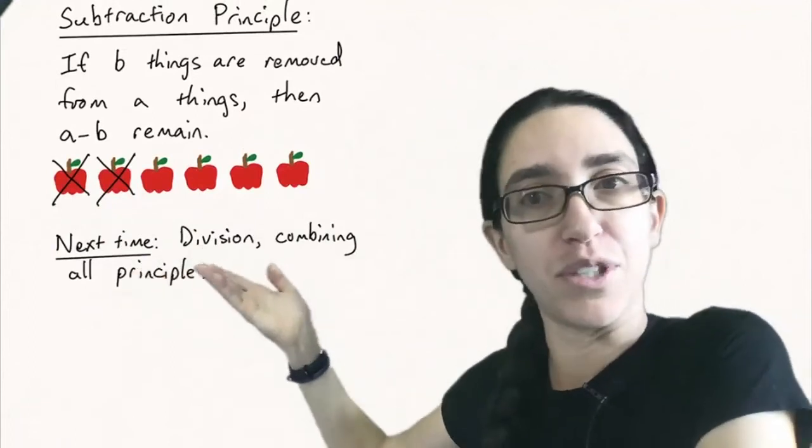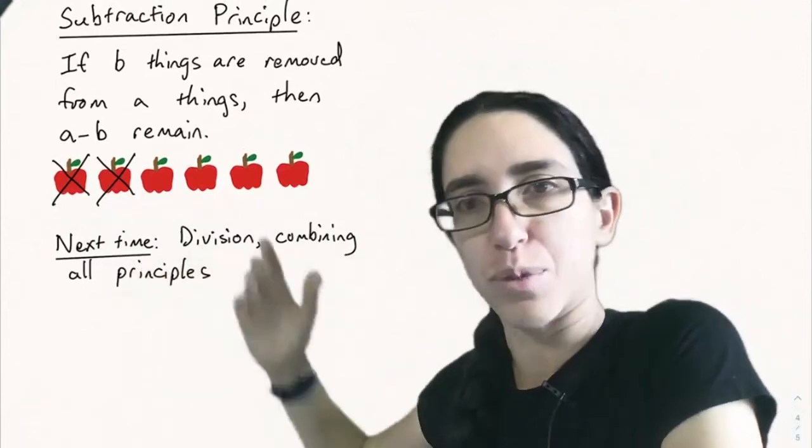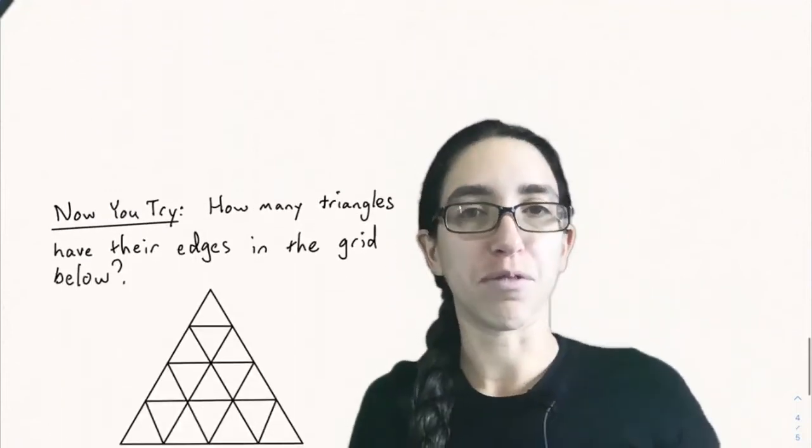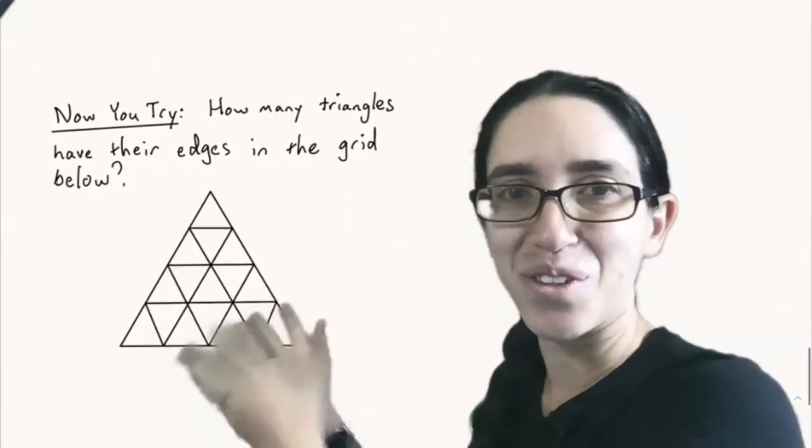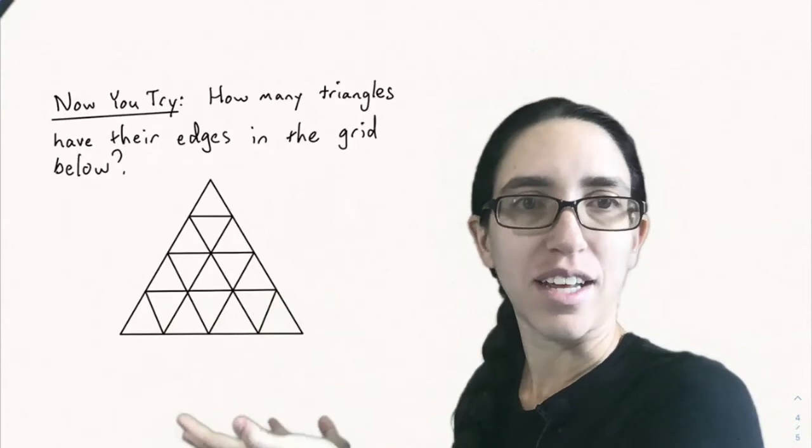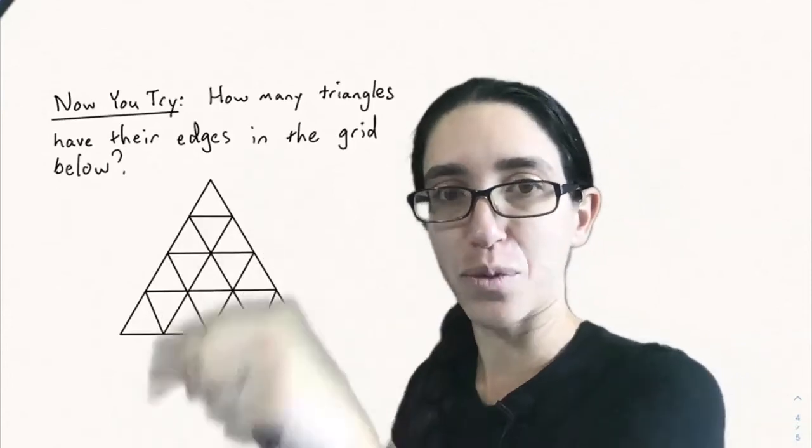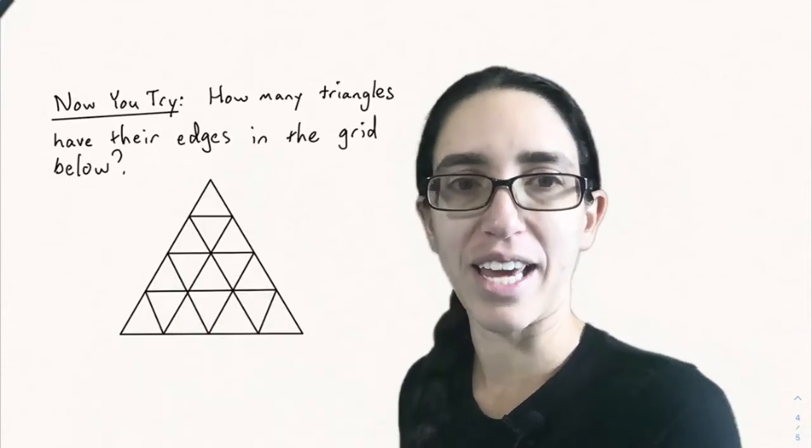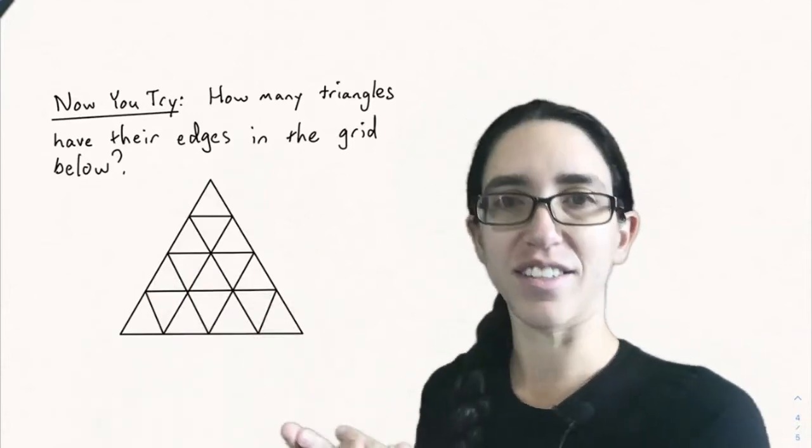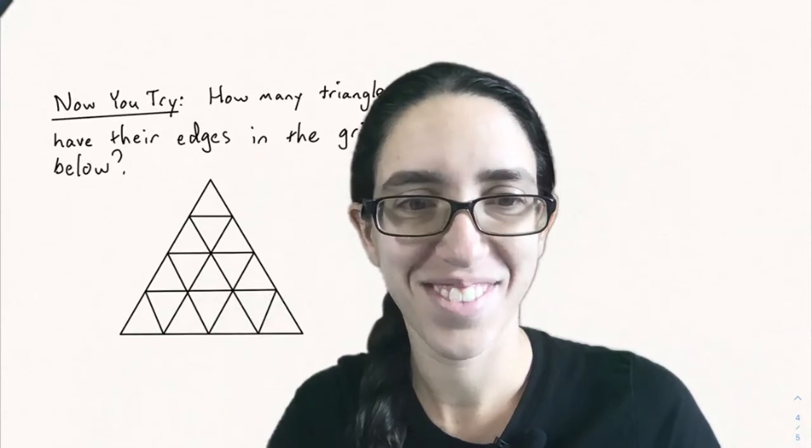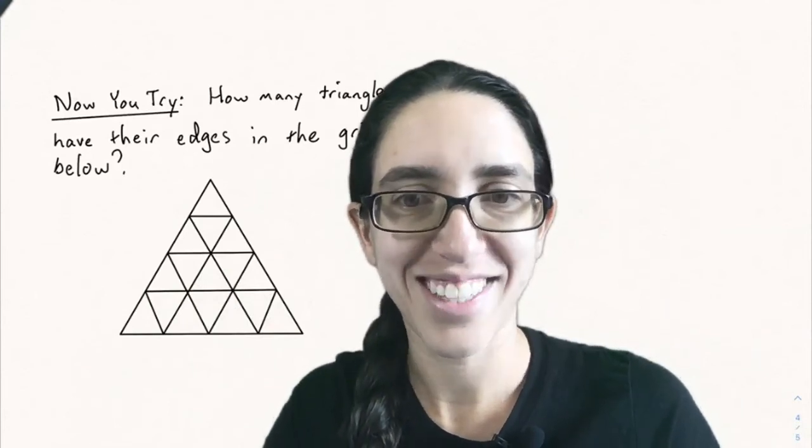Next time we're going to be talking about division, which is a little more involved in combining all the principles again. But for now, it's your turn. Now you try. How many triangles have their edges in the grid below? So before we saw a grid of squares and you counted the squares by cases, try the same thing for triangles here. How many can you find? So that's all and we will see you next time.